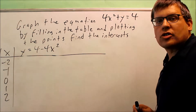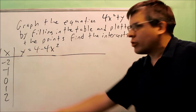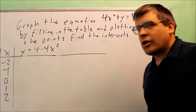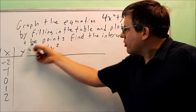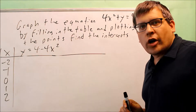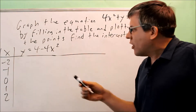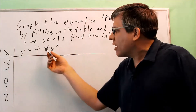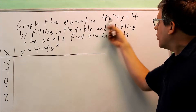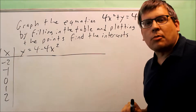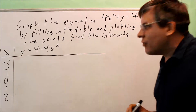We want to graph the equation 4x squared plus y equals 4 using the table method by plugging in values for x. What you'll notice I've already done here is solve the equation for y first — that makes it easier to plug in x values and get a corresponding y value. I did that by moving the 4x squared across the equal sign, so it becomes negative. Now I'm ready to start plugging in my x values.